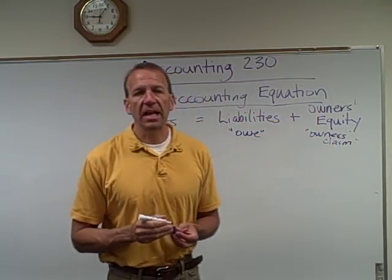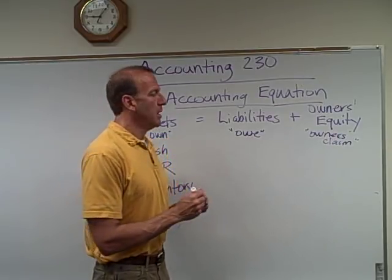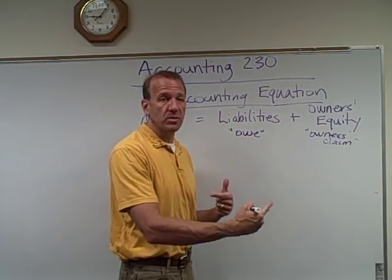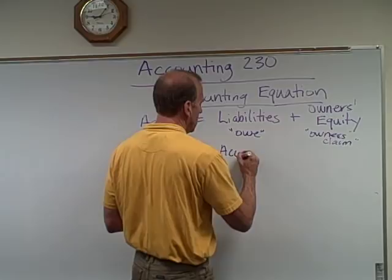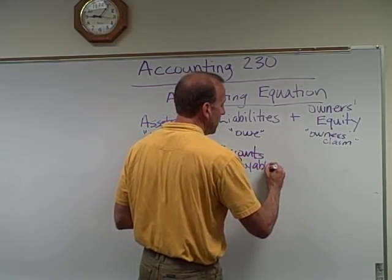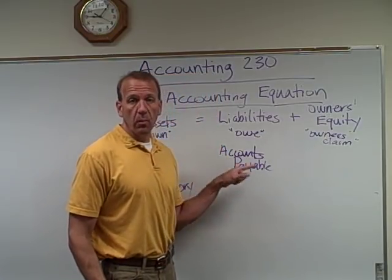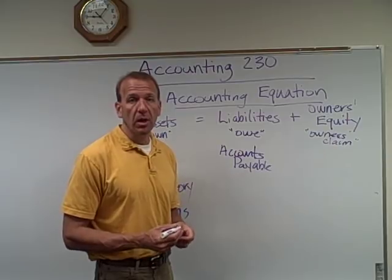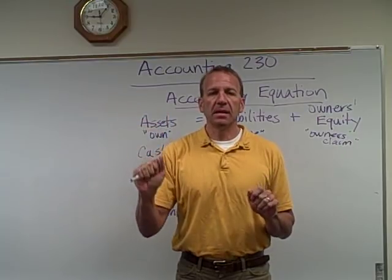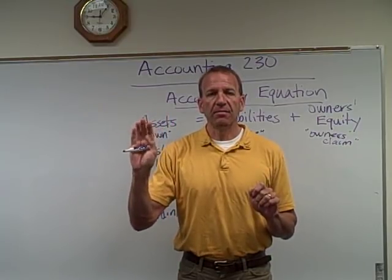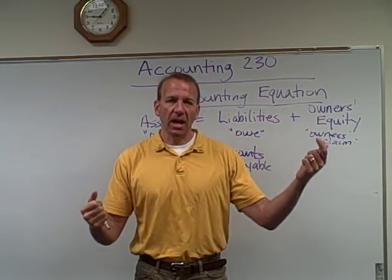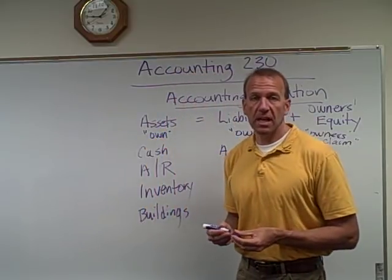Now let's move on to liabilities. Liabilities is what we owe to other people. The most common would be if we buy something on credit — it's kind of the opposite of accounts receivable. If we buy something on credit, then we have an accounts payable, meaning we have an account with somebody and we have to pay them off later. So if you have two businesses doing business with each other, if one buys something on credit, they have an accounts payable and the other has the accounts receivable.